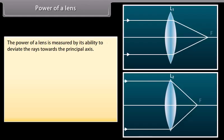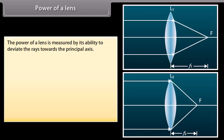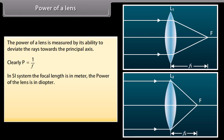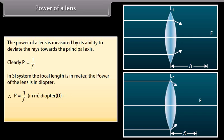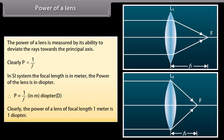Power of a lens. The power of a lens is measured by its ability to deviate the rays towards the principal axis. Lens L2 has focal length less than L1, so lens L2 bends the rays more than L1. Hence the power of L2 is greater than that of L1. Power P is directly proportional to 1/F. In SI, the focal length is in meters and the power is in diopters: P = 1/F (in meters). A lens of focal length 1 meter has power of 1 diopter.